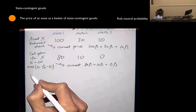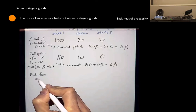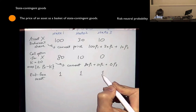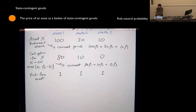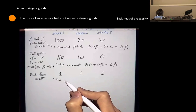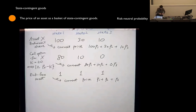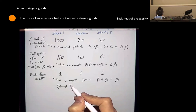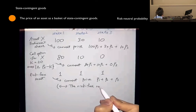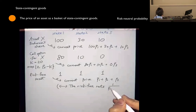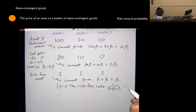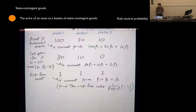What about a risk-free bond? A risk-free bond pays one unit of good whichever state may realize. The current price is P1 + P2 + P3. You are buying one unit of each state-contingent good, so the total cost is P1 + P2 + P3. In other words, the gross risk-free rate is the inverse of (P1 + P2 + P3). If you subtract one, it's called the net risk-free rate; if you don't subtract one, it's called the gross rate.